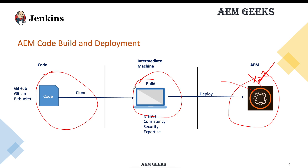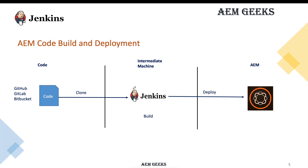Now, if we replace this intermediate machine with a tool that performs these tasks automatically — configured once and then run iteratively without needing a developer — that solves the problem. Jenkins is one such tool. You configure jobs once, and these jobs can be triggered iteratively whenever you need, or they can trigger automatically whenever you push something to your code base.